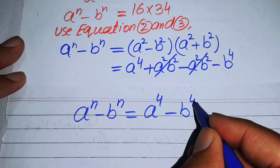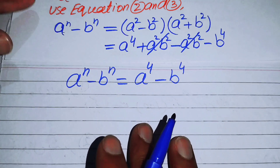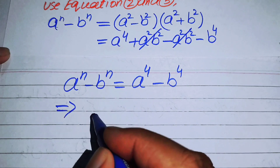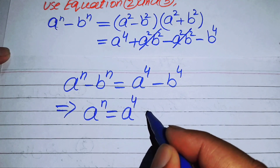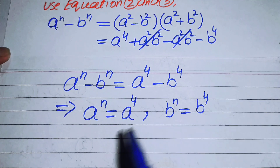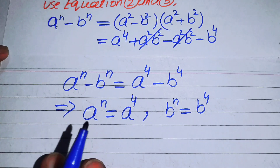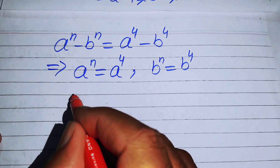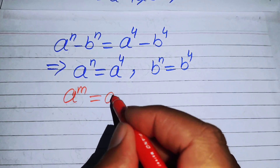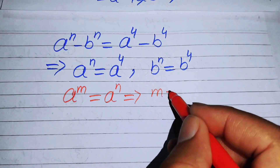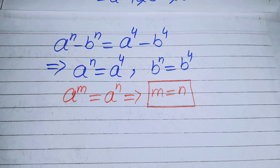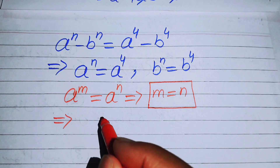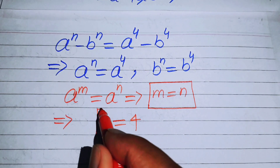Comparing both sides, we have a^n equals a⁴ and b^n equals b⁴. Applying the exponential law — if a^m equals a^n then m equals n — we equate the exponents on both sides. Both give the same result: n equals 4.